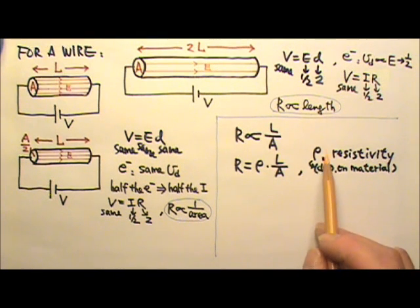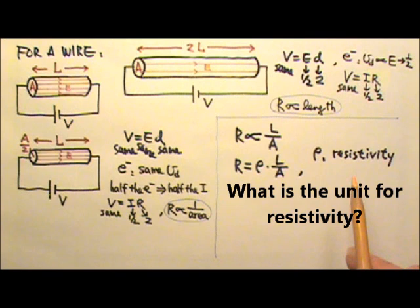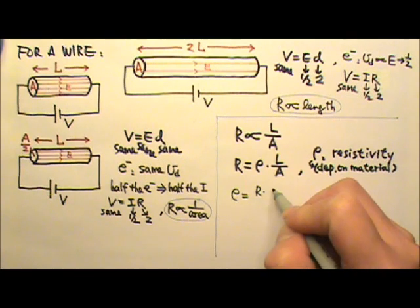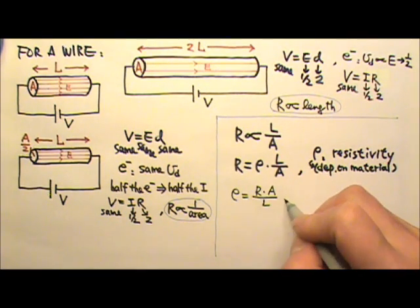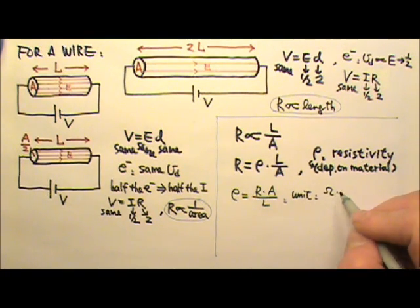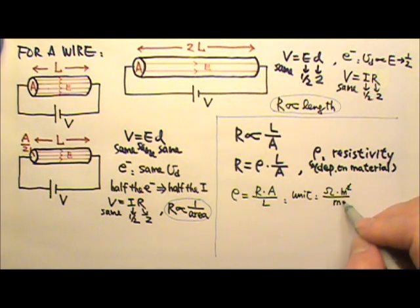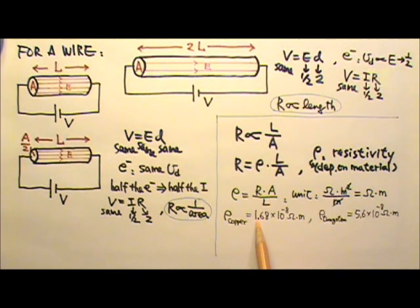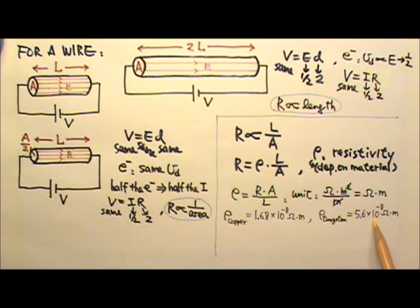What do you think the unit for resistivity is? If I solve for rho, the resistivity equals R times A divided by the length L. Unit-wise, this will be ohms times the cross-sectional area in meters squared, divided by the length in meters. One of the meters cancels, so we get ohms times meters — that's the unit for resistivity. For example, the resistivity of copper is 1.68 times 10 to the negative eighth, and the resistivity of tungsten is 5.6 times 10 to the negative eighth ohm-meters. The resistivity of tungsten is bigger than that of copper, so tungsten is not as good a conductor as copper.